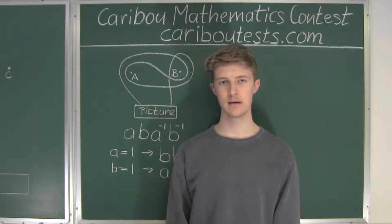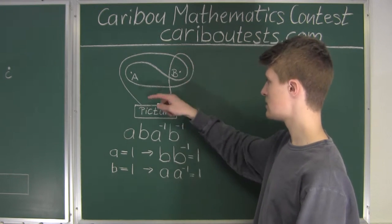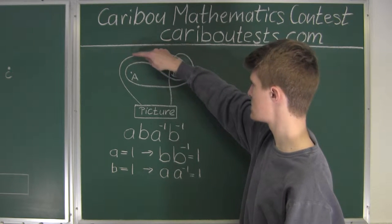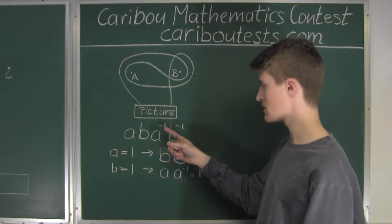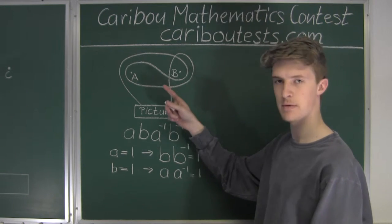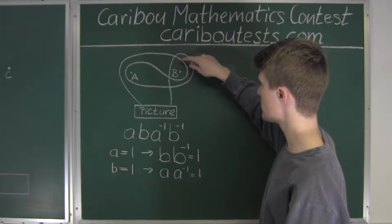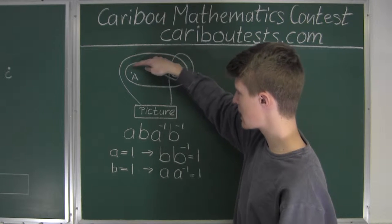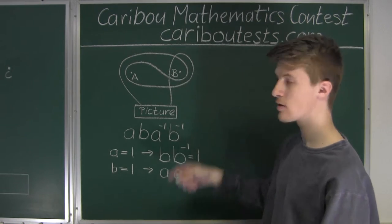The new technique introduced symbols A and B for every time nails A and B were wrapped around clockwise. So here the string goes clockwise around nail A and clockwise around nail B. It also introduced the symbols A to the negative 1 and B to the negative 1 for every time the nails A and B were wrapped around counter-clockwise.